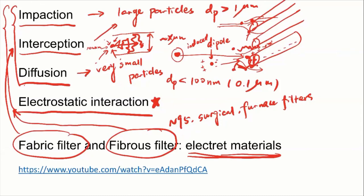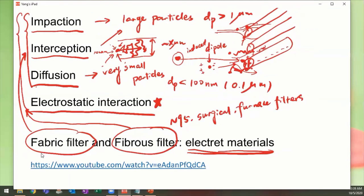Nowadays, you're familiar with different mask types — surgical masks, cotton DIY masks, and N95. DIY masks are mostly fabric filters, while N95, surgical masks, and household furnace filters are fibrous filters using electrostatic interaction for much higher filtration efficiency. Here is a short video introducing N95 materials.